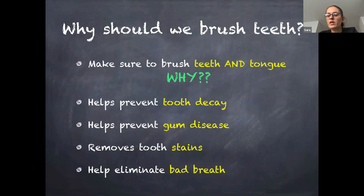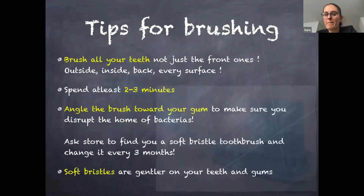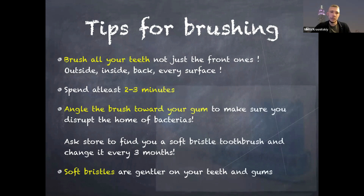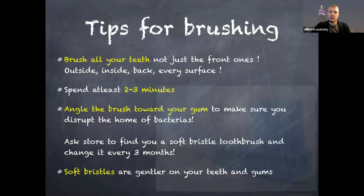We brush our teeth to prevent tooth decay and cavities, prevent gum disease, keep tooth stains away, and help eliminate bad breath. When brushing, make sure you're getting all surfaces — not just your front teeth — including the outside, inside, back, and every surface, especially your bottom teeth. Spend at least two to three minutes brushing; setting a timer or using an electric toothbrush can help. Angle the toothbrush towards your gums to disrupt bacteria buildup throughout the day. Use soft bristle toothbrushes and change them every three months.